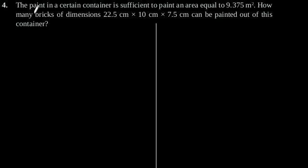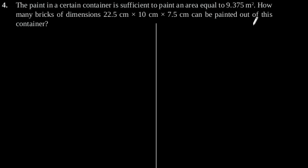Exercise 13.1, Question number 4. The paint in a certain container is sufficient to paint an area equal to 9.375 m². How many bricks of dimension 22.5 cm × 10 cm × 7.5 cm can be painted out of this container?